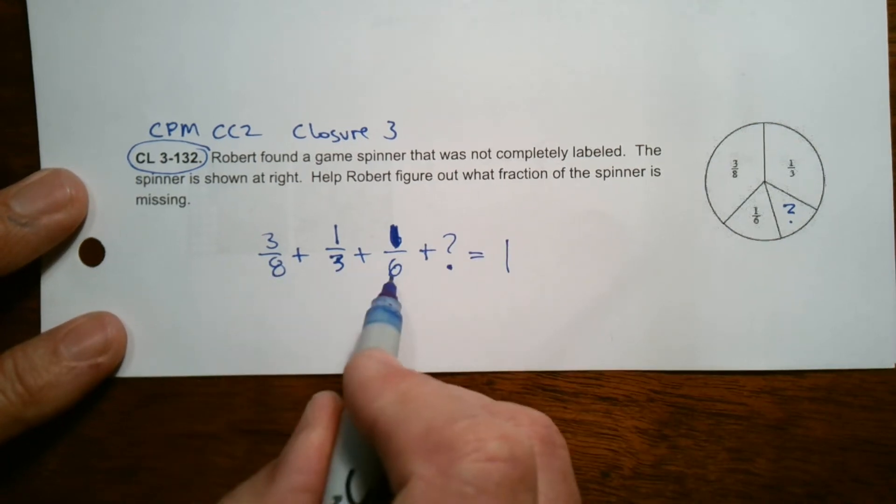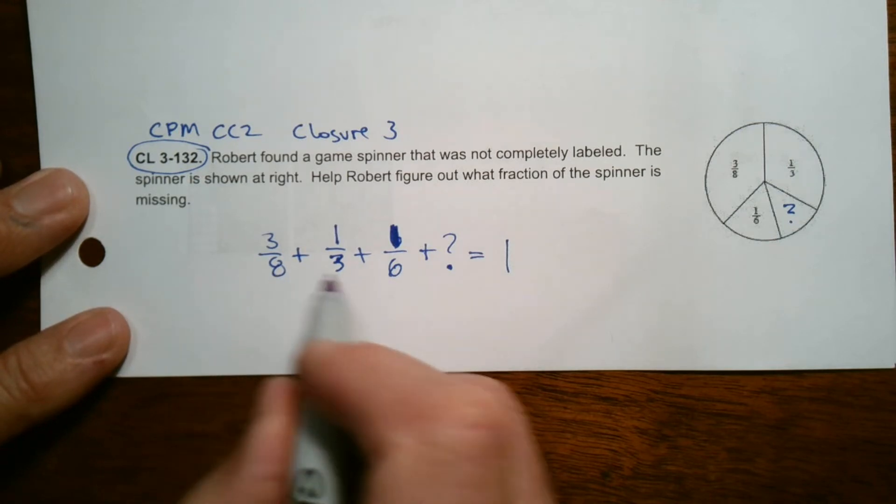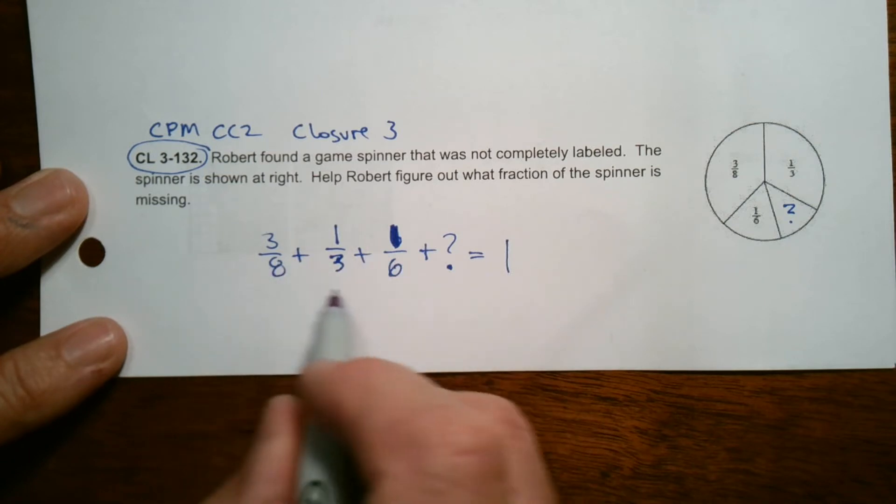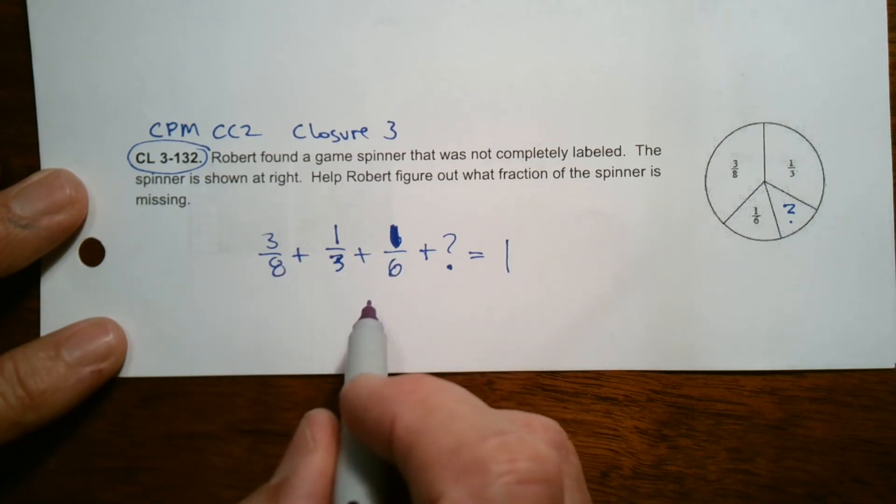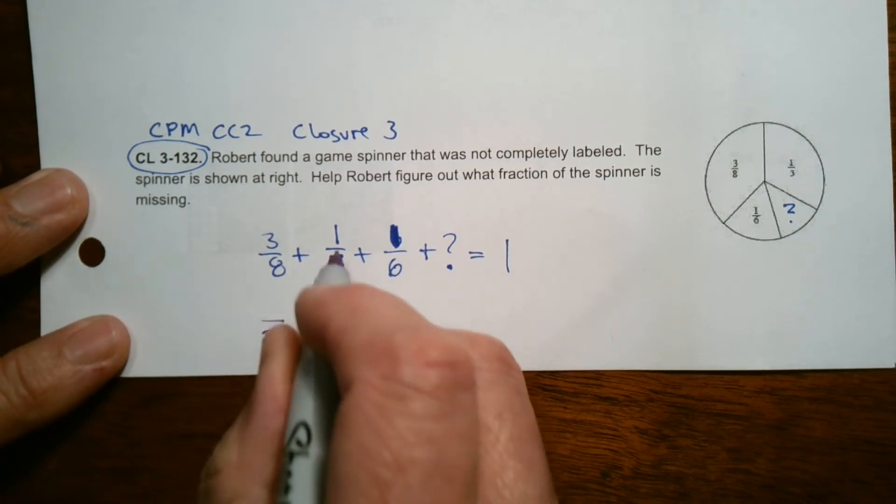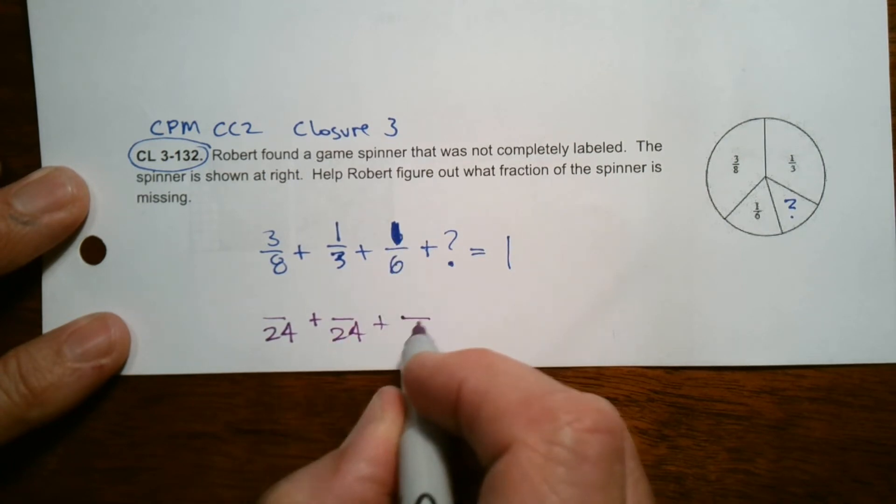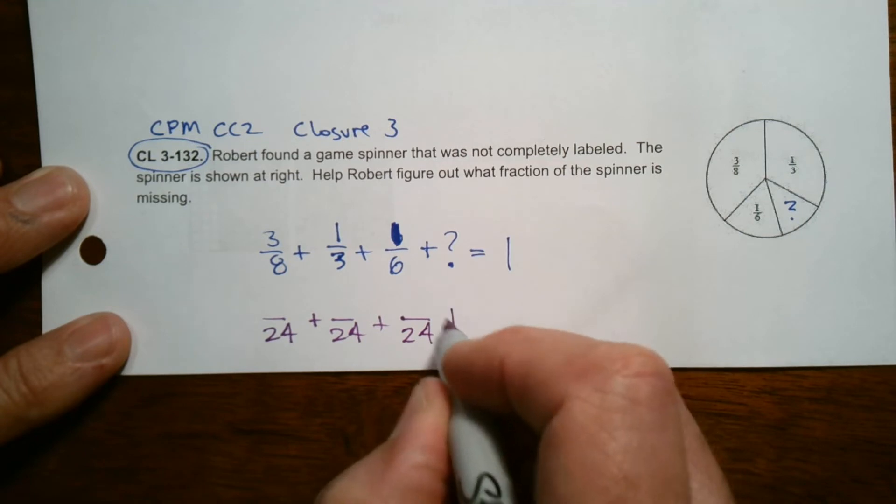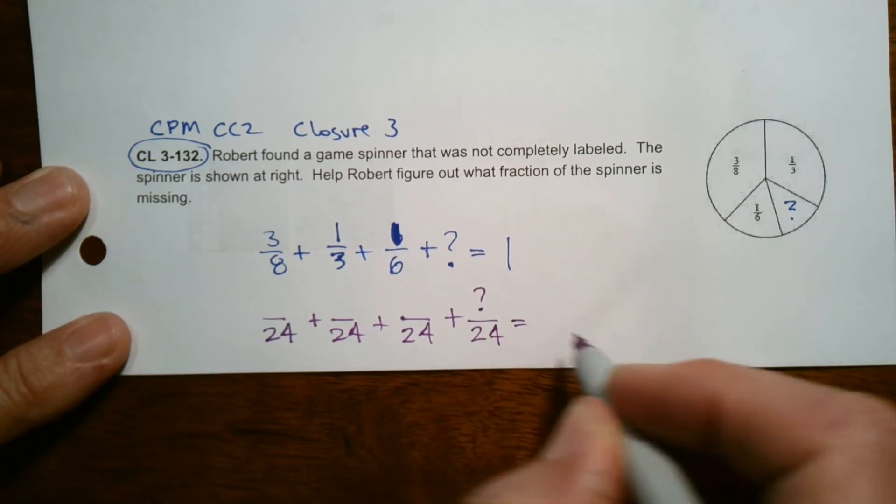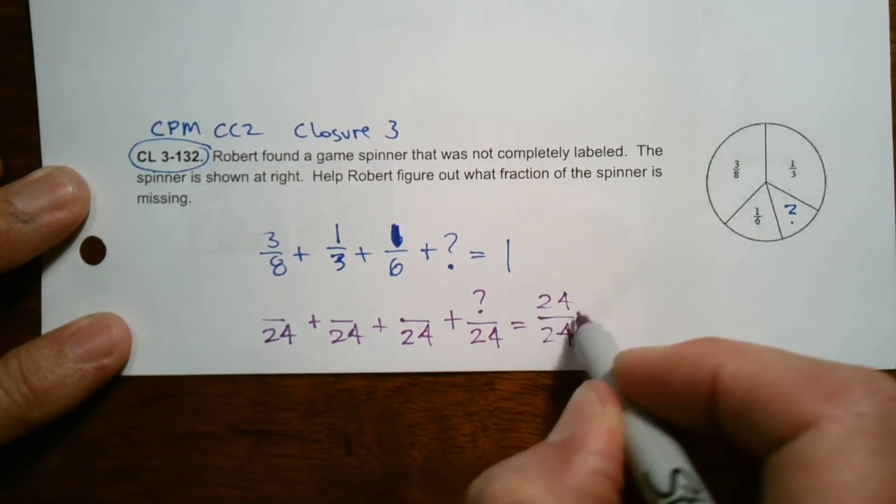So if I look at 8, 3, and 6, and I'm looking for the number that all of these go into that are factors of. So the common multiple, the least common multiple in this case, I believe would be 24. So I want to make this 3/8 into something over 24 plus that 1/3 into something over 24 plus that 1/6 into something over 24 plus then this would be some question mark over the 24 is going to equal, well, 1 would be 24 over 24, right? So that would be my total parts.